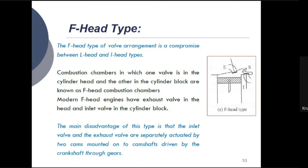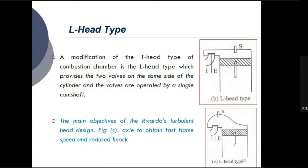The F-head combustion chamber combines features of the L-head and I-head designs, with one valve in the cylinder head and the other in the cylinder block. The exhaust valve is in the cylinder head and the inlet valve is in the cylinder block. The main disadvantage is that the inlet and exhaust valves are actuated separately by two camshafts, presenting the same issue as with the T-head type. This concludes the different types of combustion chambers available for the petrol engine.